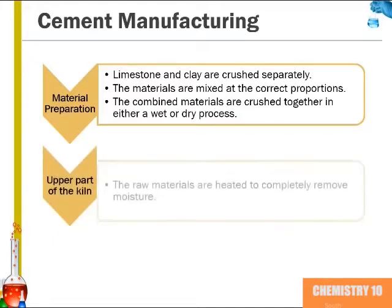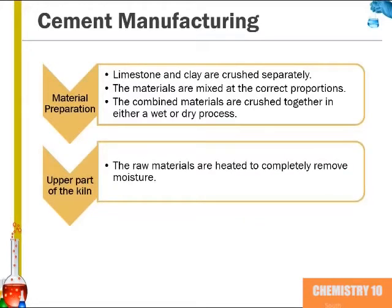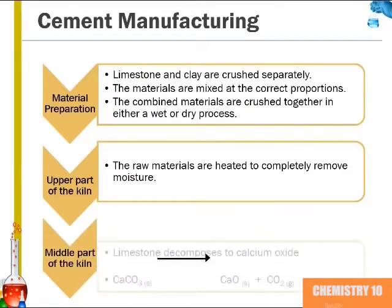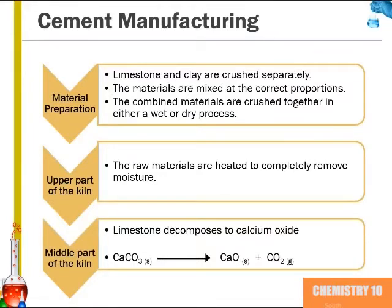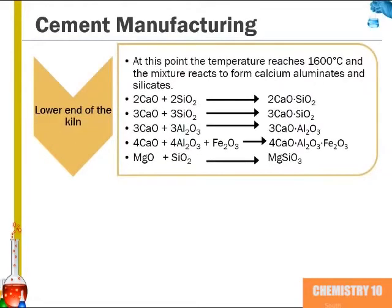In the upper part of the kiln, the raw materials are heated to completely remove moisture. In the middle part of the kiln, limestone decomposes to calcium oxide in this reaction. By the lower end of the kiln, the temperature reaches 1600 degrees Celsius, and the mixture reacts to form calcium aluminates and silicates. At this point, the mixture is referred to as cement clinker.